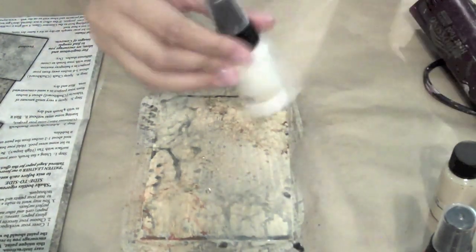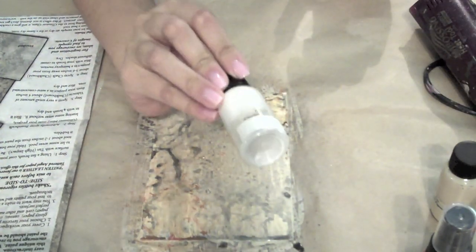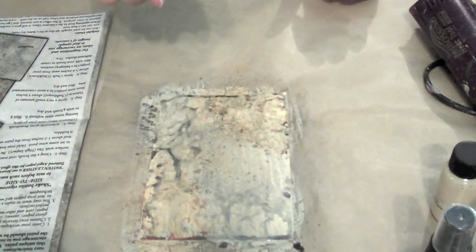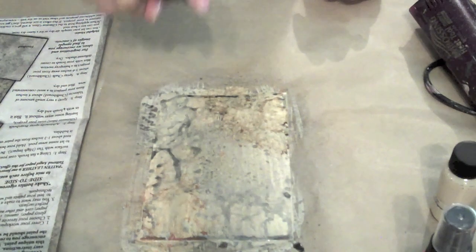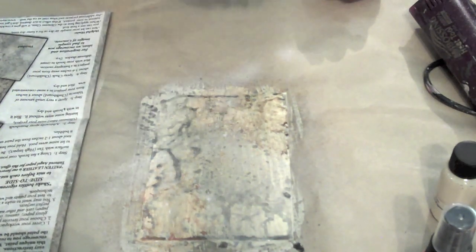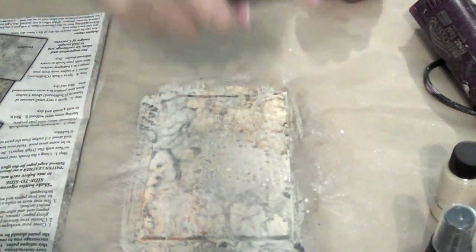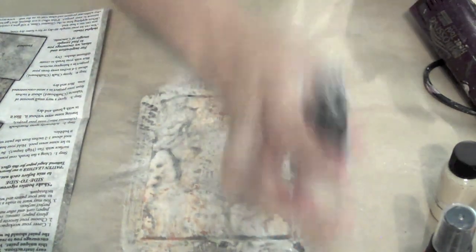All right, and then your last step is to take the white, which is the chalk chalkboard mist. You're going to hold it about five to six inches away. And you're going to cover the whole area. Nice, fine mist. And then you're going to let it dry.